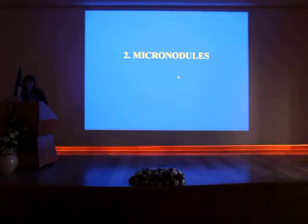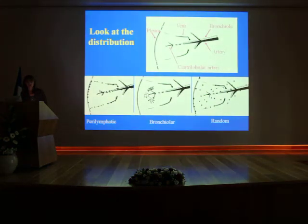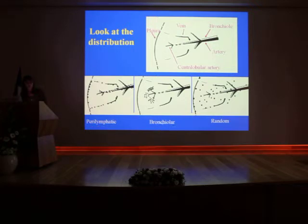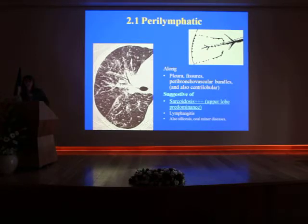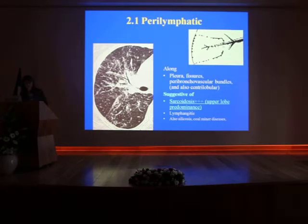The second pattern is micronodules. With micronodules, it's very easy — you need to look at the distribution. There are three different distributions: perilymphatic, centrilobular, and random. Perilymphatic distribution is the main pattern, the main sign in sarcoidosis. Remember that sarcoidosis is a granulomatous disease. You will find small nodules along the pleura, along the interlobular septa, and along the bronchovascular bundles — meaning they are located where lymphatics are.